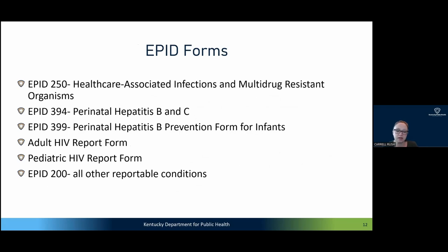These are the forms. You would use EPID 250 for healthcare-associated infections and multidrug-resistant organisms. Use EPID 394 for perinatal hepatitis B and C, and EPID 399 for perinatal hepatitis B prevention for infants. There is an adult and a pediatric HIV form, and then you would use the EPID 200 for all other reportable conditions.